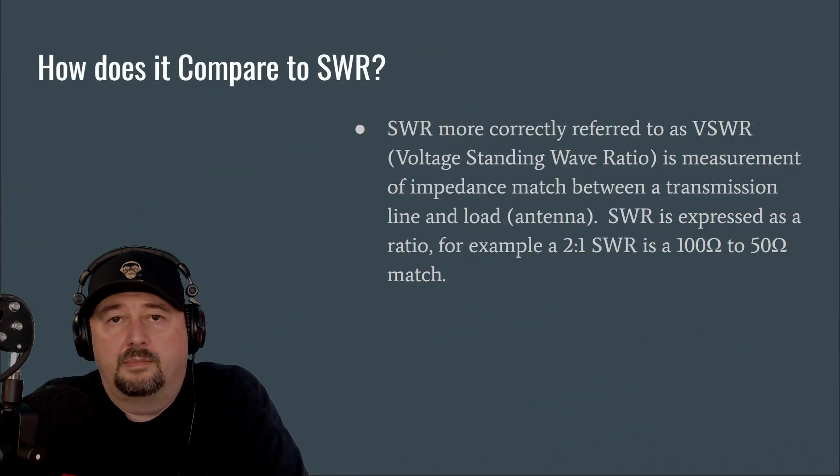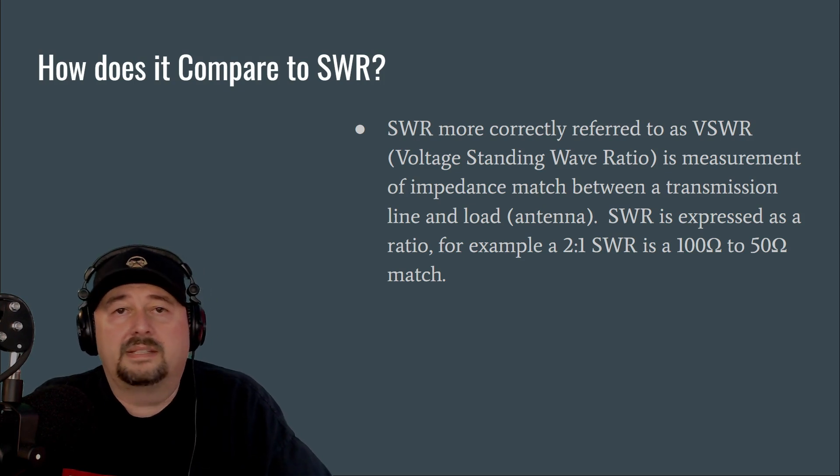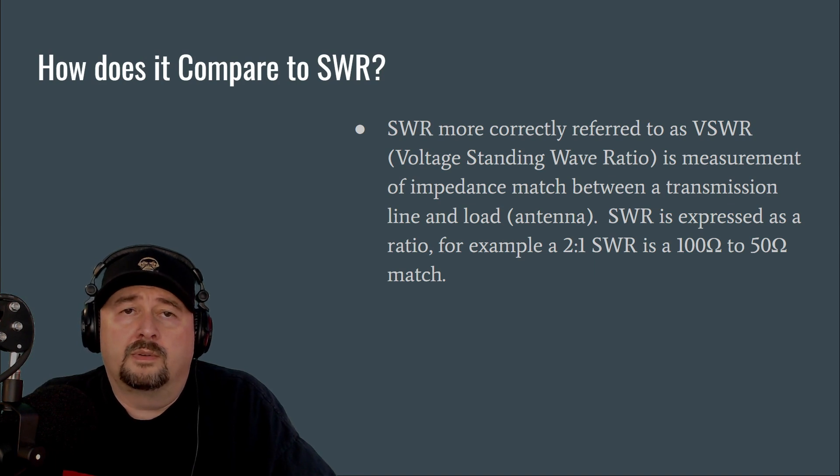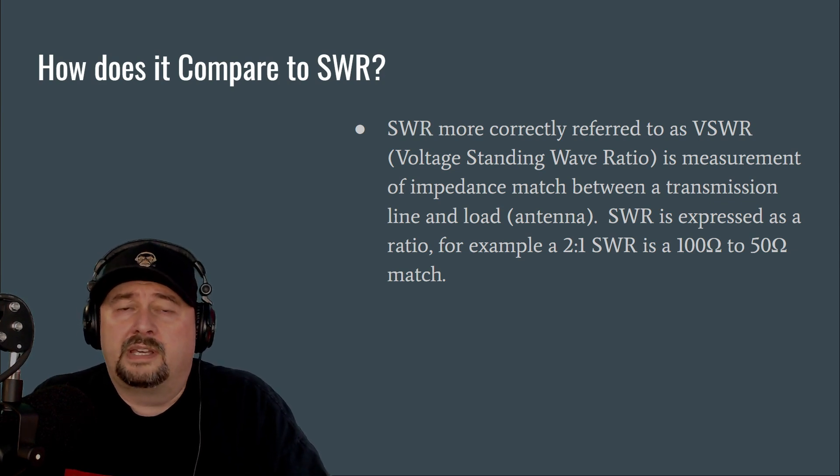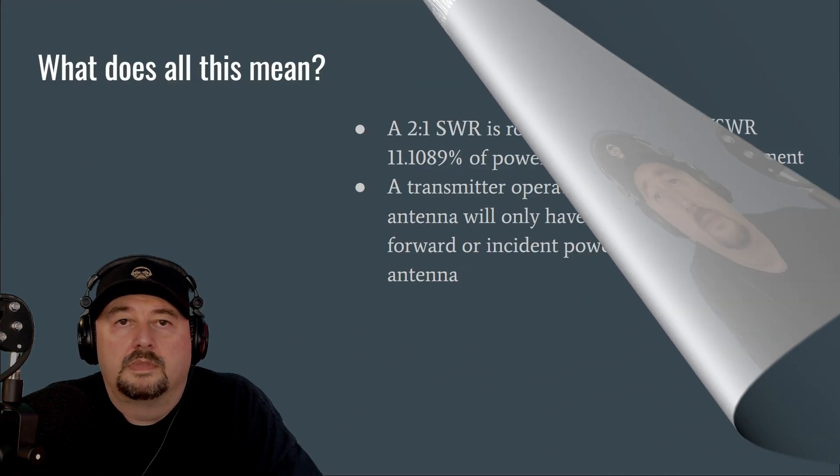So you may be asking, how does it compare to SWR? Return loss and SWR basically measure the exact same thing. SWR, or more correctly referred to as VSWR, sometimes pronounced VISWR, is your voltage standing wave ratio. It is a measurement of impedance match between a transmission line and a load, in our case an antenna. SWR is expressed as a ratio. For example, 2 to 1 SWR is a 100 ohm to a 50 ohm match. And I think ham radio folks use SWR because it's a lot easier to understand a ratio than it is a formula based off of a logarithmic equation. So SWR is not linear. And it's very difficult to understand the difference between a 20 dB loss and a 25 or 35 dB loss. But it's easy for you to contextualize 2 to 1 SWR as something that you might be concerned about.